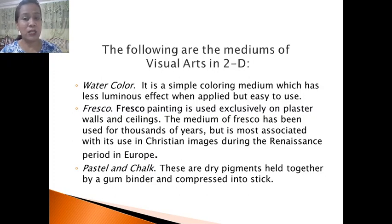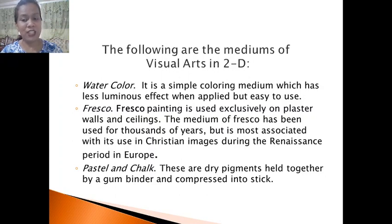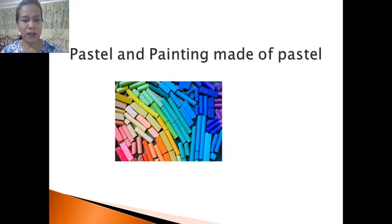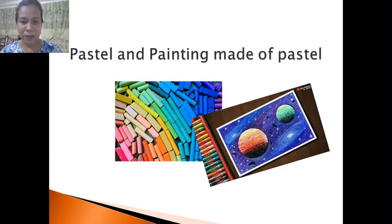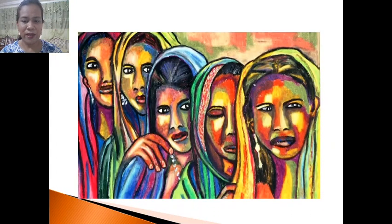Fresco painting is used exclusively on plaster walls and ceilings. The medium of fresco has been used for thousands of years but is most associated with Christian images during the Renaissance period in Europe. Pastel and chalk are dry pigments held together by a gum binder and compressed into sticks — you are also familiar with these.